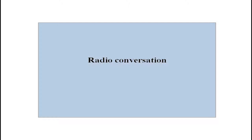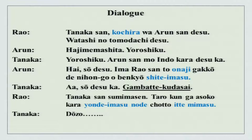Tanaka-san, kochira wa Arun-san desu, watashi no tomodachi desu. Hajimemashite. Yoroshiku. Yoroshiku. Arun-san mo Indo kara desu ka? Hai, so desu. Ima, Rao-san to onaji gakkou de Nihongo wo benkyou shite imasu. Ah, so desu ka, ganbatte kudasai. Tanaka-san, sumimasen — Tarou-kun ga asoko kara yonde imasu no de, chotto itte mimasu. Ah, douzo. How much did you understand? Most of it, except for this new form and a couple of new words.